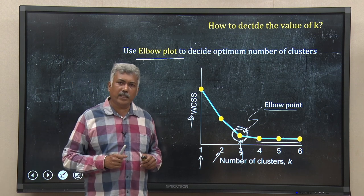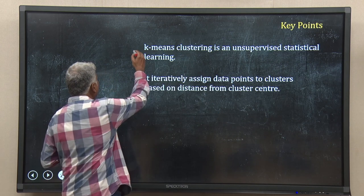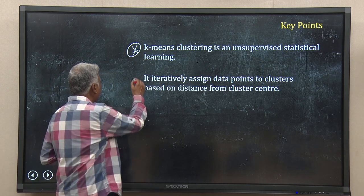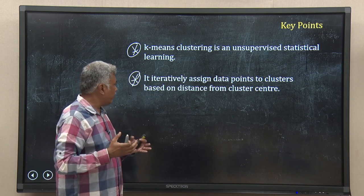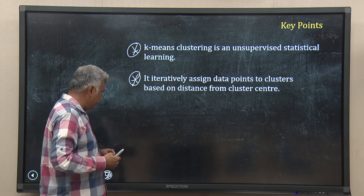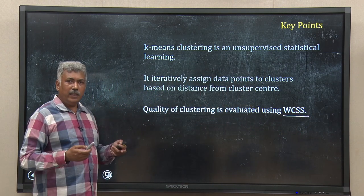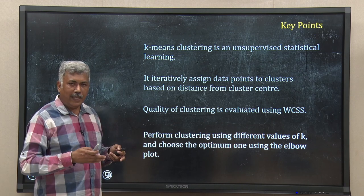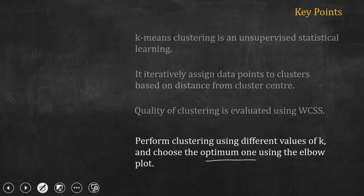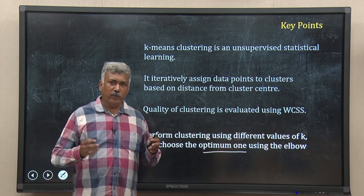That is all for this lecture on k-means clustering. To summarize the main points: k-means clustering is an unsupervised method of statistical learning where we iteratively assign data points to clusters based on the distance from the cluster center or centroid. The quality of clustering is evaluated using within cluster sum of squares (WCSS), and you can use the elbow plot — with WCSS on the vertical axis and number of clusters on the horizontal axis — to decide the optimum number of clusters for your problem. Thank you for being with me today.